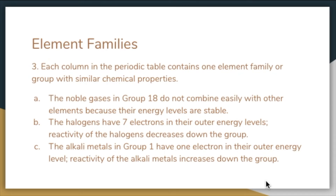Noble gases — look at the structure of neon in figure 6. Neon and the elements below it in Group 18 have 8 electrons in their outer energy levels. Their energy levels are stable, so they do not combine easily with other elements. Helium, with 2 electrons in its only energy level, is also stable. Once thought to be completely unreactive and called inert gases, when chemists learned some could react, the name was changed to noble gases. Their stability makes possible their use to protect filaments in light bulbs. Noble gases also produce colored lights in signs — neon gives orange-red, argon gives lavender, and helium gives yellowish-white.